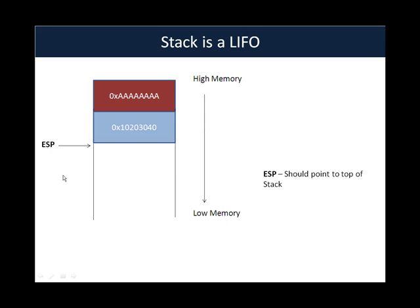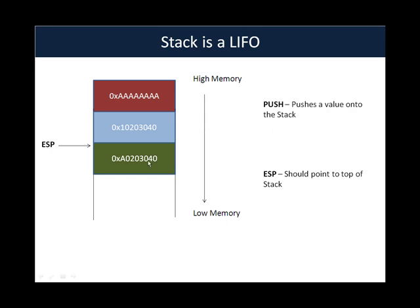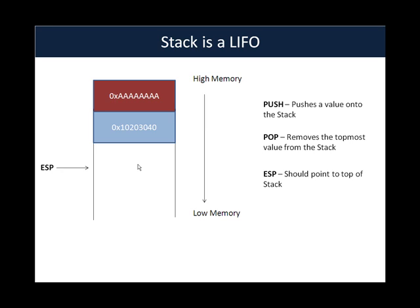A stack supports only two operations. The first is a push operation, which pushes data into the stack. As soon as we push a value — say 0x20, 0x30, 0x40 in hex — we need to update the stack pointer. ESP will then point to the top of the stack after the addition of the new value. When you're done using that value and want to remove it from the stack, you use the pop operation. Once the pop operation is used, the data is removed from the stack, and you need to fix ESP to point to the new top of the stack.